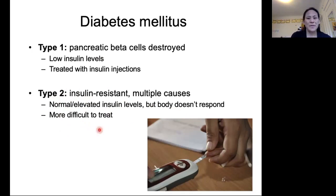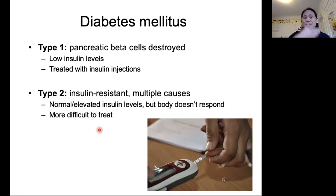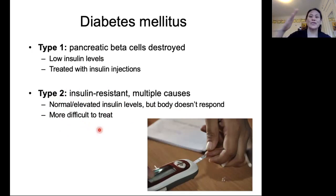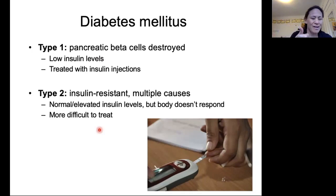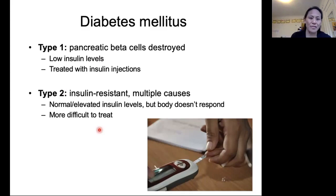Type 2 diabetes used to be called late onset diabetes because it would tend to happen later in life, but now it's becoming more and more common at earlier and earlier ages in the US. This is problematic because we don't really know how to treat it well, and also diabetes is a risk factor for a lot of other health conditions.